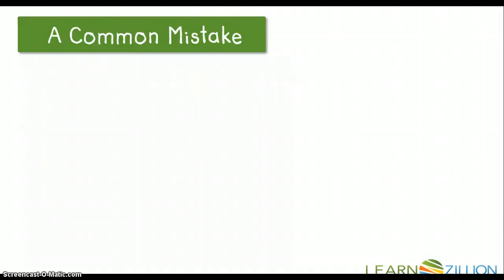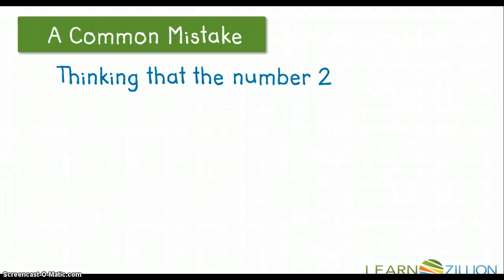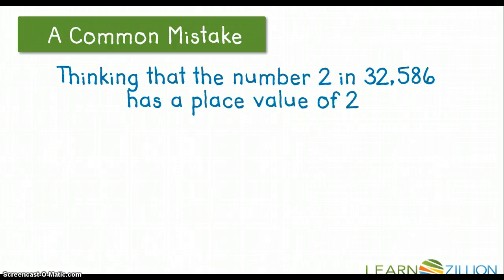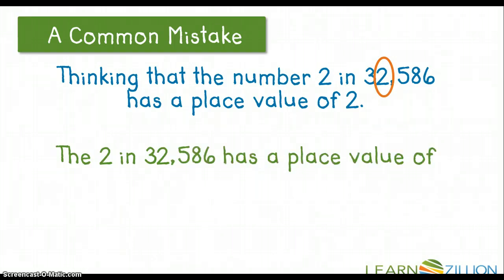A common mistake that many students make is thinking that the number 2 in 32,586 has a place value of 2, when in reality that 2 has a place value of 2,000, because it is in the thousands place.